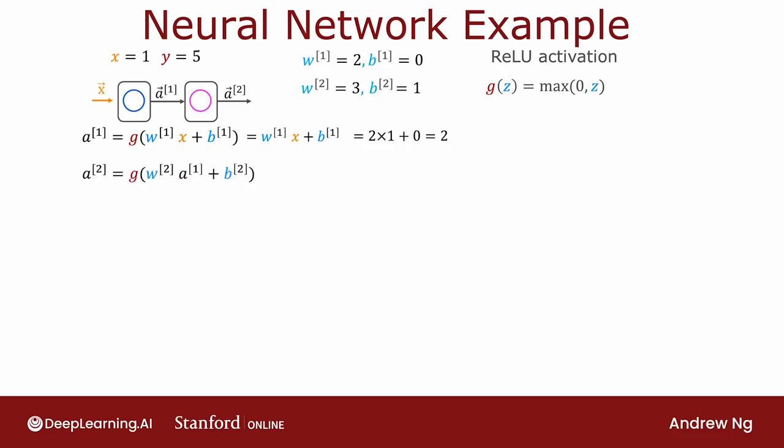And then similarly, a2 equals this, g of w2, a1 plus b2, which is w2 times a1 plus b. Again, because we're in the positive part of the ReLU activation function, which is 3 times 2 plus 1, which is equal to 7.